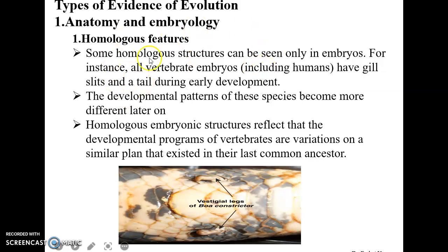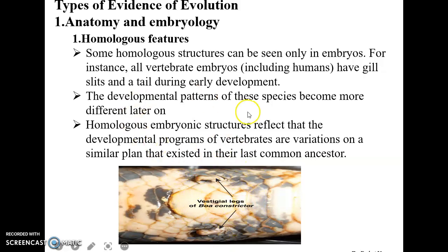Some homologous structures can be seen only in embryos. For instance, all vertebrate embryos including humans have gill slits and tails during early development. As shown in the figure, gill slits are present at the embryological stage, and the developmental patterns of these species become more different later on.